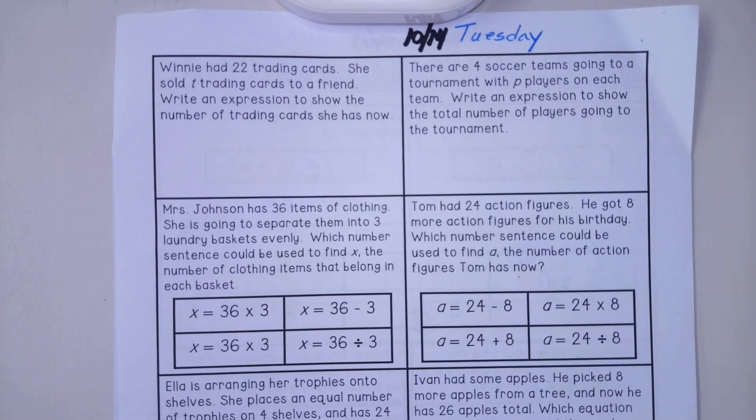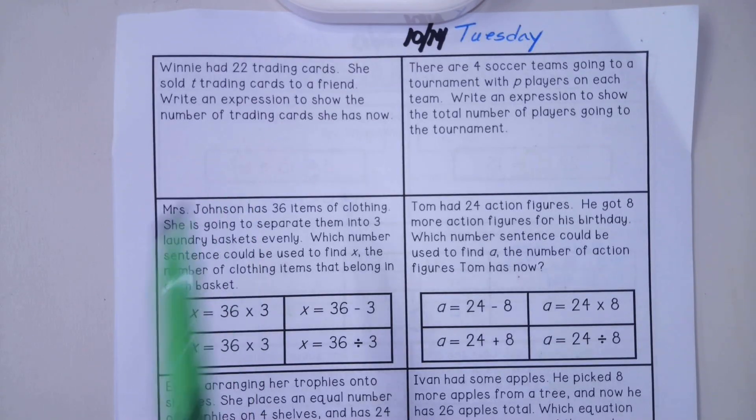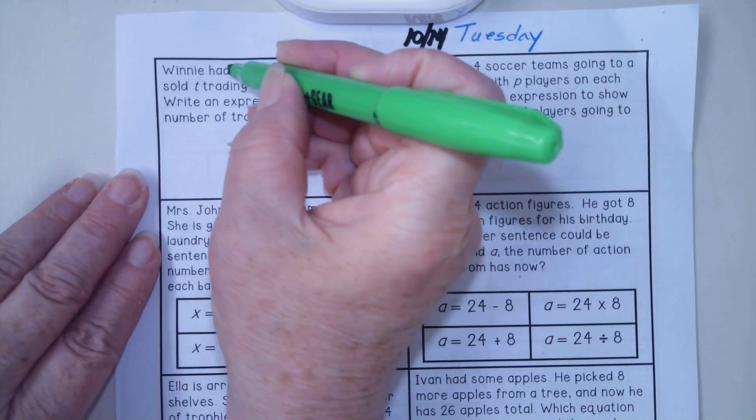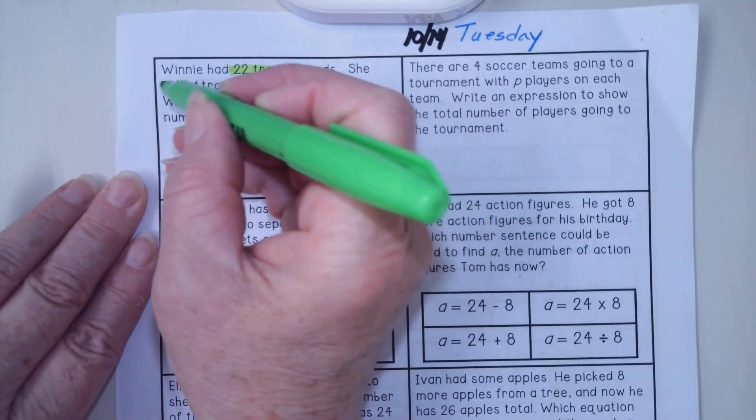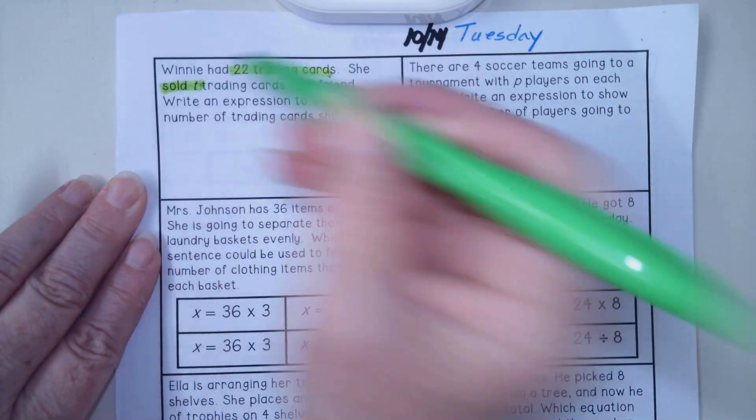The first question says, Winnie had 22 trading cards. She sold T trading cards to a friend. Write an expression to show the number of trading cards she has now.